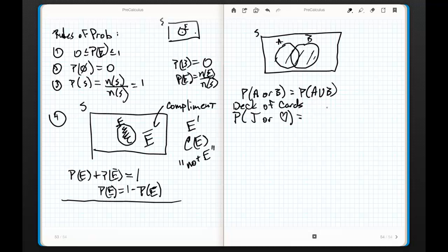The problem is that jacks and hearts are not mutually exclusive. In other words, it is possible to be both a jack and a heart. So, think about this. What's the probability of drawing a jack with one card? I'm going to give myself some more space.